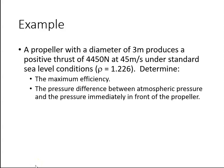A propeller with a diameter of 3 meters produces a positive thrust of 4,450 newtons at 45 meters per second under standard sea level conditions. We're given the density at standard sea level, rho equals 1.226. We're asked to determine the maximum efficiency and the pressure difference between atmospheric pressure and the pressure immediately in front of the propeller.